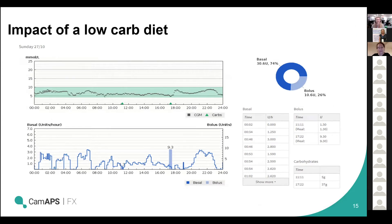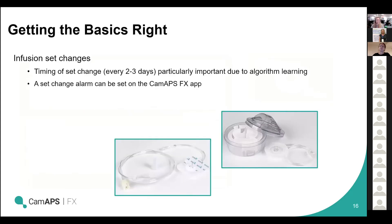We're not advocating necessarily a low carb diet at all, but this is a nice example of how the system will always be able to manage glucose levels within target if the carb intake is on the lower side. This person happened to have much less carbs and a quite low GI meal in the evening and you can see how well the system has managed to control the glucose levels there with very little variability. So if you're finding that you're having some quite big peaks post-meal, some of the things we've talked about — accuracy of carb counting and adjusting carb ratios — can make a difference.